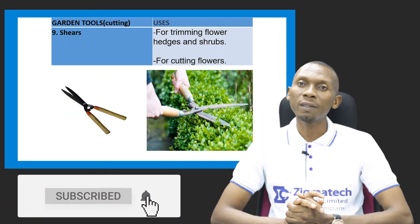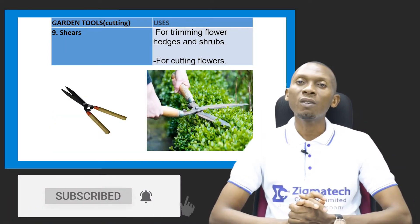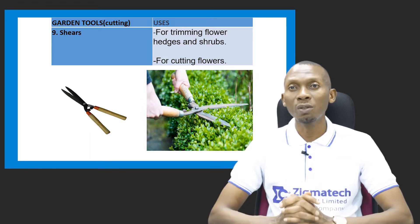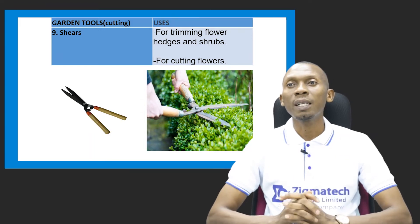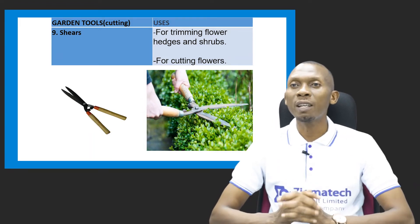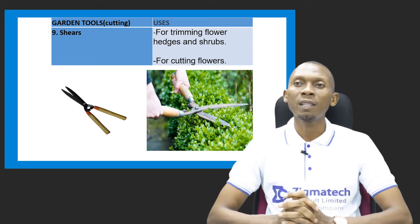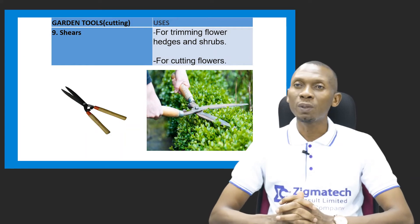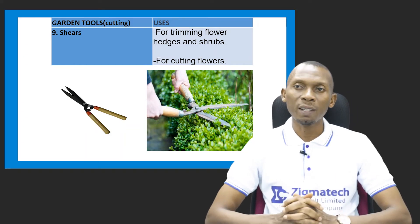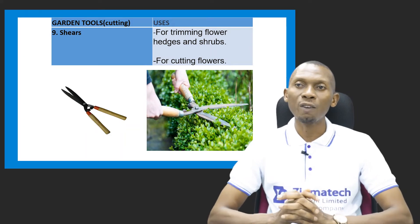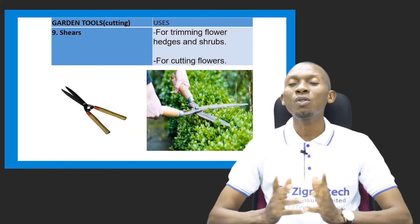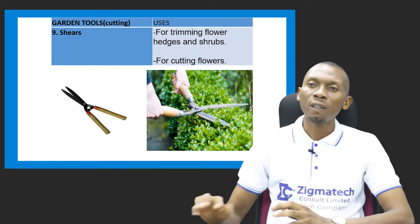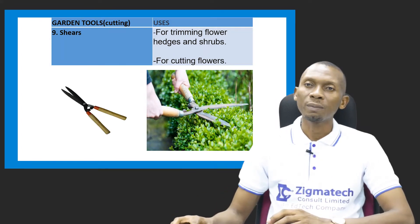We have the shears, which is another garden tool and actually a cutting tool. It is used for trimming flowers, flower hedges, and shrubs, and also for cutting flowers.